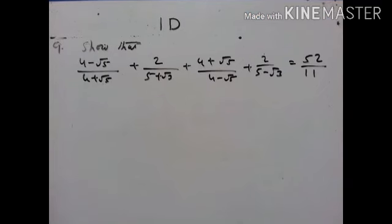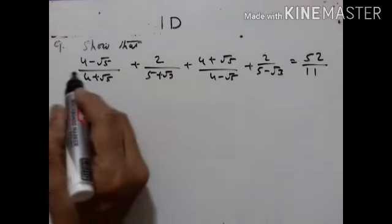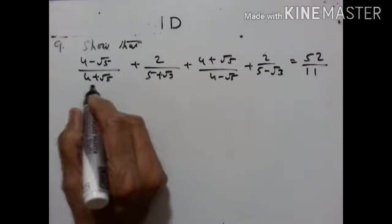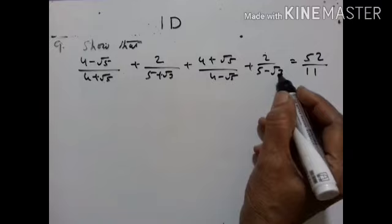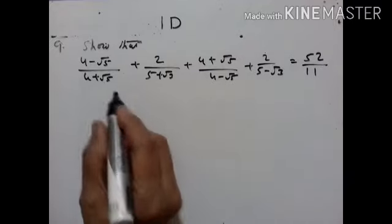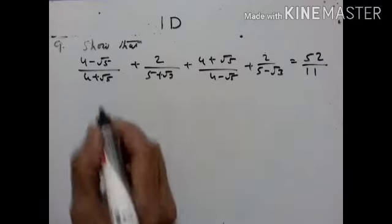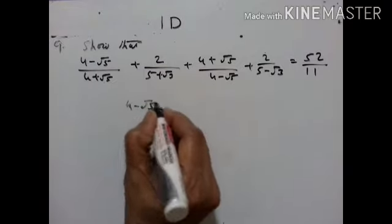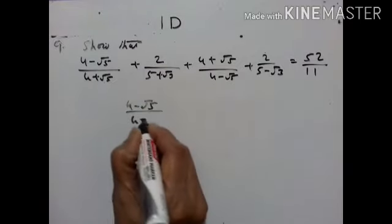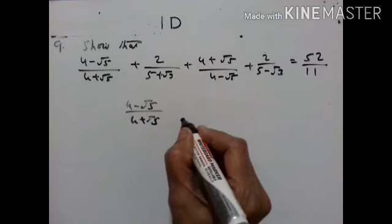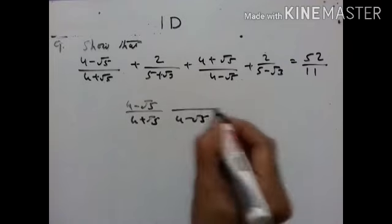Hello students, welcome back. Let's go to Exercise 1D, ninth problem. We have to show that all these numbers add up to 52 upon 11. Let us take all these numbers one by one. First: (4 minus √5) upon (4 plus √5). Rationalize the denominator by multiplying by (4 minus √5).